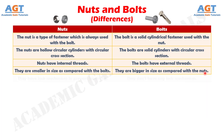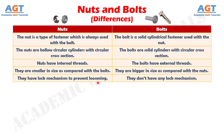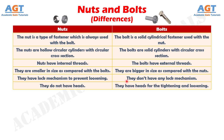Number 5: The nuts have a lock mechanism to prevent loosening, whereas bolts don't have any lock mechanism. Number 6: The nuts do not have heads, whereas bolts have heads for tightening and loosening.